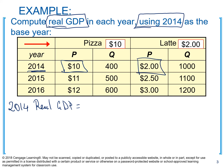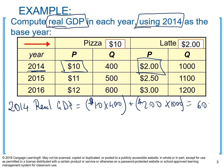For real GDP in 2014, we use $10 (price of pizza) multiplied by 400, plus $2 (price of latte) multiplied by 1,000. So real GDP equals $6,000. Notice that in the base year, real GDP and nominal GDP are actually equal, because we're using the same prices.